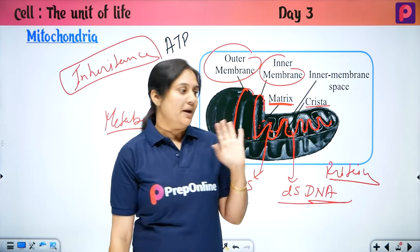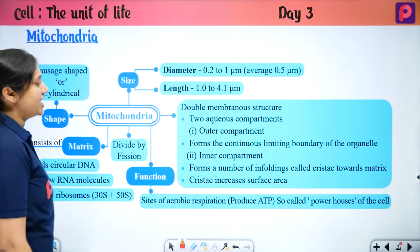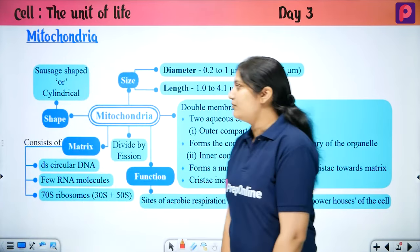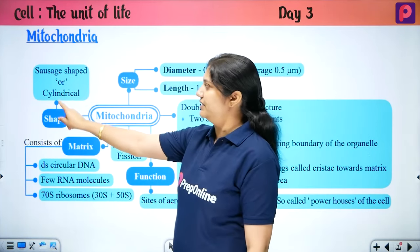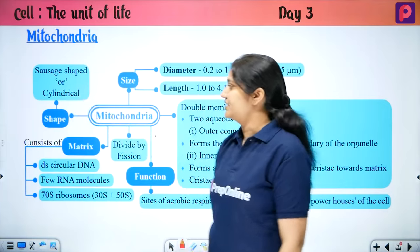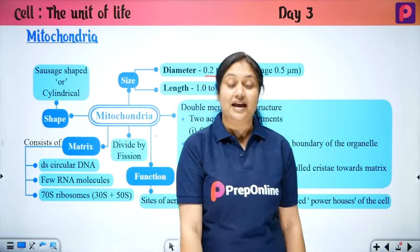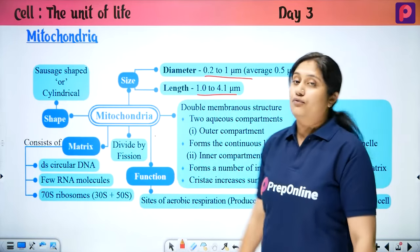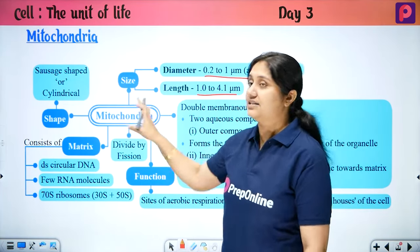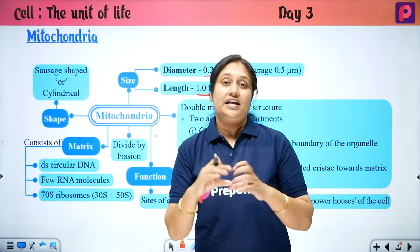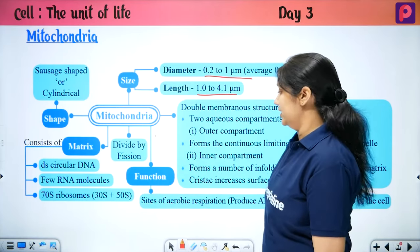Mitochondria is a very interesting organelle. Let's look at a chart summarizing its properties. Mitochondria is cylindrical in shape. Its diameter is 0.2 to 1 μm and its length is 1 to 4.1 μm. Mitochondria divides by fission. The matrix portion contains double-stranded circular DNA, RNA, and 70S ribosomes. The 70S ribosome has two subunits: 50S and 30S.